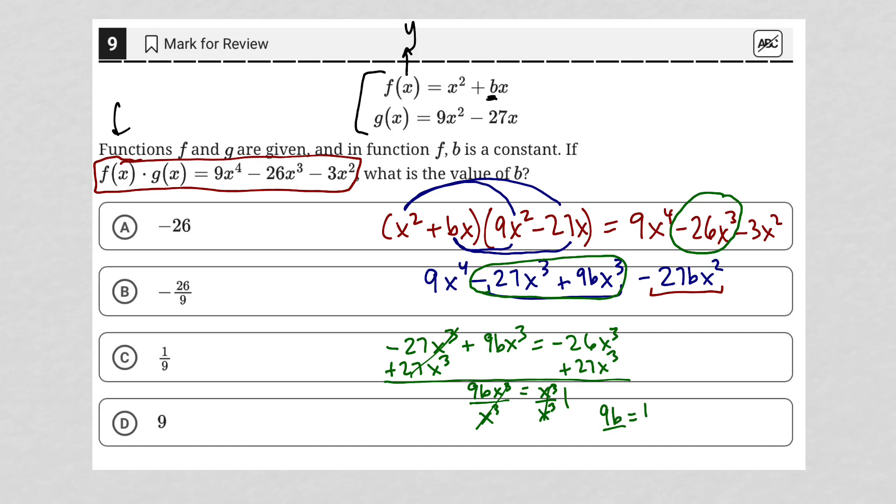We have 9b equals 1, divide by 9, divide by 9, and b is equal to 1 ninth.